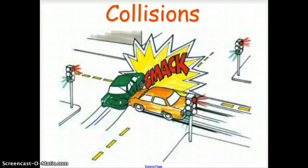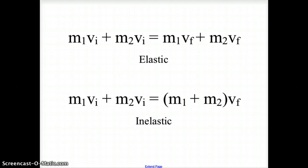Let's explore collisions. Through this video we're going to see how to calculate certain variables within a collision in both elastic and inelastic collisions. There are two formulas for collisions, the first being for elastic collisions. Elastic collisions are those where the objects colliding do not stick together after the collision, so the masses will be separate before and after. The basic formula is m1·vi + m2·vi = m1·vf + m2·vf, where m is mass and v is velocity.